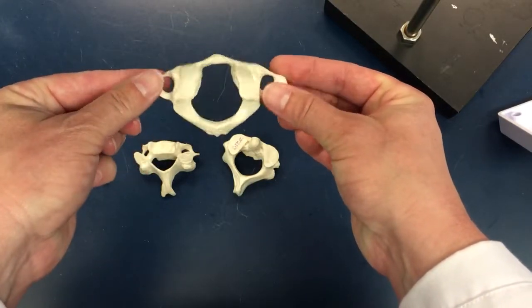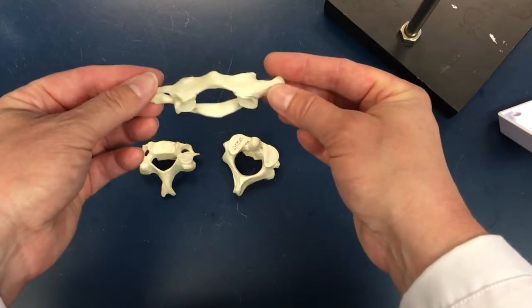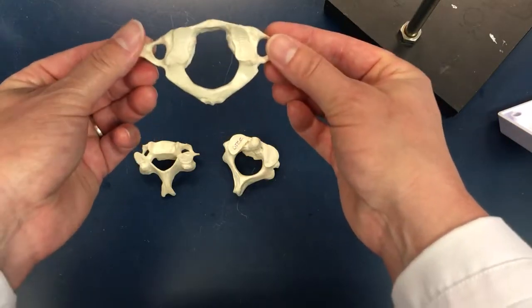This vertebrae allows for the yes movement—nodding your head up and down. So this is the C1 atlas.